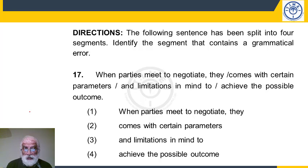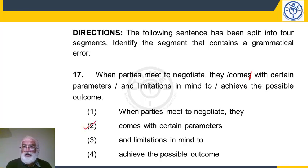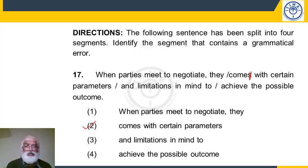Question 17: a sentence with four parts and one has an error. The sentence is: 'When parties meet to negotiate, they comes with certain parameters and limitations in mind to achieve the best possible outcome.' Parties is plural and 'they' is plural — 'comes' is singular and therefore wrong. It should be 'they come with certain parameters.' The error is in part 2, where 'comes' must be changed to 'come.'